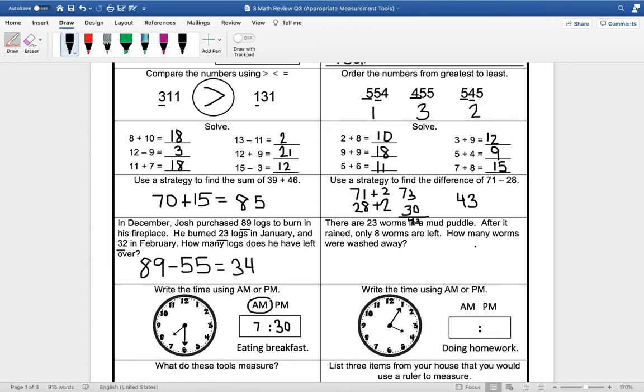All right, there are 23 worms in a mud puddle. After it rained, only 8 worms are left. How many worms were washed away? So we started with 23 and we ended with 8, so we're going to subtract to see how many were washed away. 23 minus 8 is 15, so 15 worms were washed away.